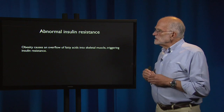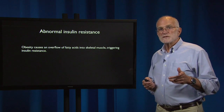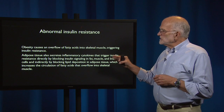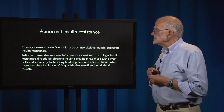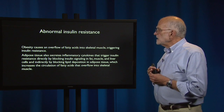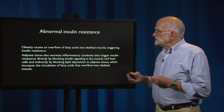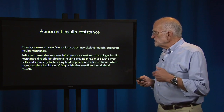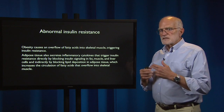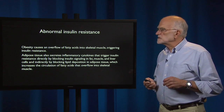Obesity causes an overflow of fatty acids into skeletal muscle, and that can trigger insulin resistance by itself. Fat tissue — adipose tissue — also secretes inflammatory cytokines that trigger insulin resistance directly by blocking insulin signaling in fat, muscle, and liver. It does so indirectly by blocking lipid deposition in fat tissue, which increases the circulation of fatty acids that then overflow into skeletal muscle. There is a dynamic loop going on here, and obesity can cause more and more insulin resistance.